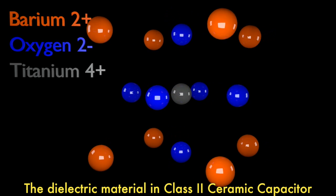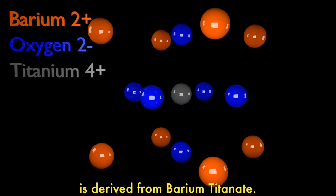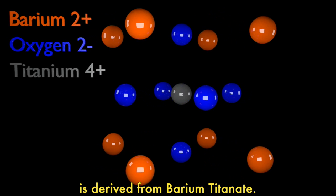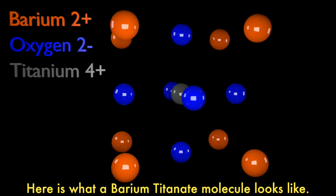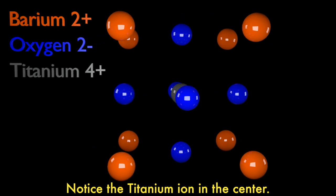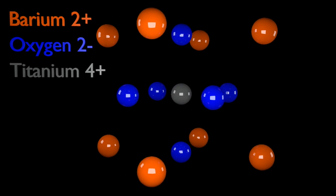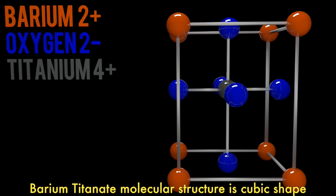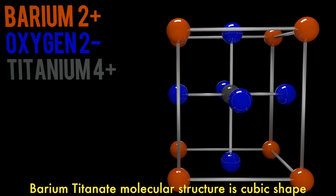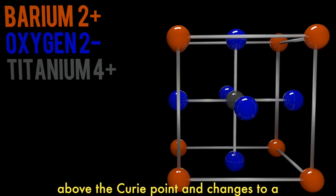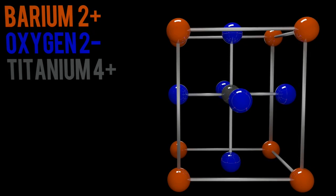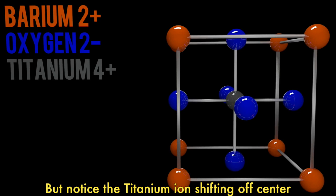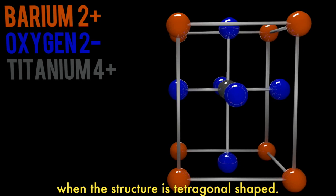The dielectric material in class 2 ceramic capacitors is derived from barium titanate. Here's what a barium titanate molecule looks like. Notice the titanium ion in the center. Barium titanate molecular structure is cubic shape above the Curie point and changes to a tetragonal shape below the Curie point. But notice the titanium ion shifting off center when the structure is tetragonal shape.